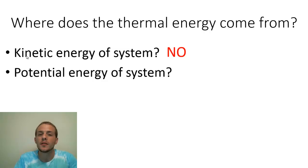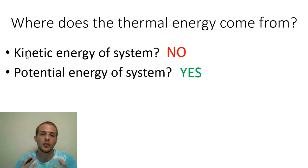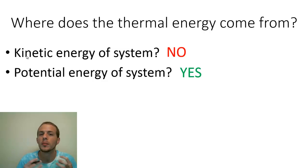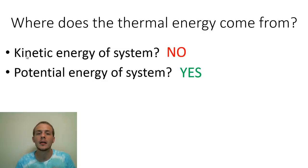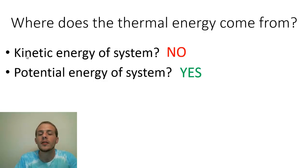That means the energy released in an exothermic process must have come from the original potential energy of the system. The potential energy of reactants or products in a chemical reaction comes from how those subatomic particles — protons and electrons — are arranged, and the electrostatic forces between them: ionic bonds, covalent bonds, and so on. Different arrangements of protons and electrons give rise to different potential energies.